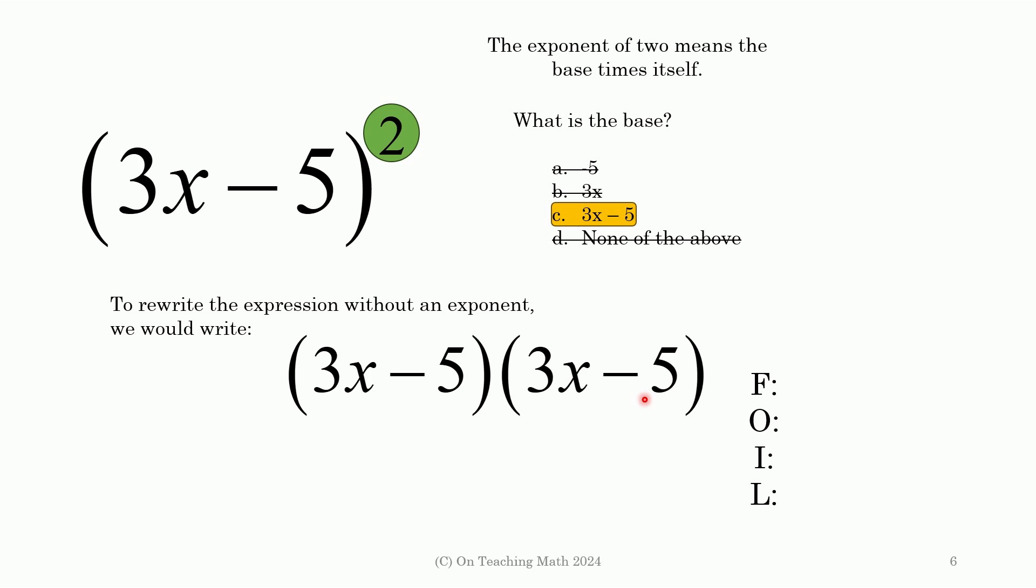And from there, well, you know, good old FOIL, first, outer, inner, last. You could do that right here. So to do 3x minus 5 squared, you could write it out and then use FOIL.